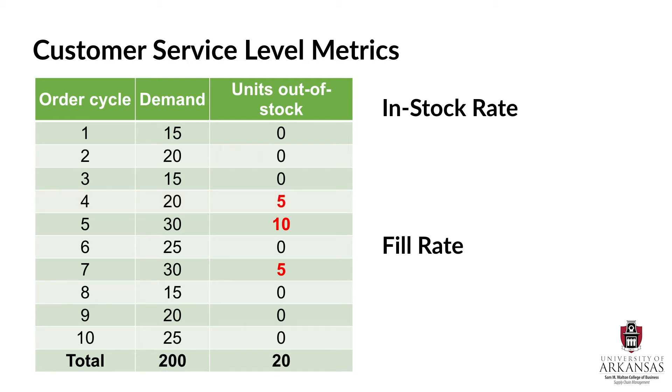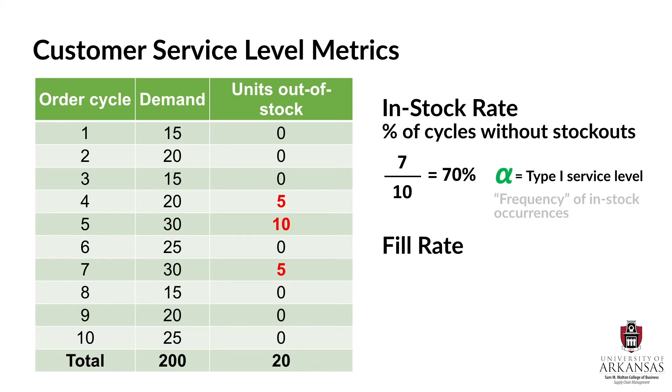Now, let's determine what the in-stock rate is. The in-stock rate is the percentage of all order cycles in which no stockouts were observed. In our example, there are a total of 10 cycles, and in 7 of these cycles we did not stock out. So our in-stock rate is 70% in this case. The in-stock rate is often called alpha or the type 1 service level. And it is important to remember that the in-stock rate gives us a measure of the frequency of in-stock occurrences.